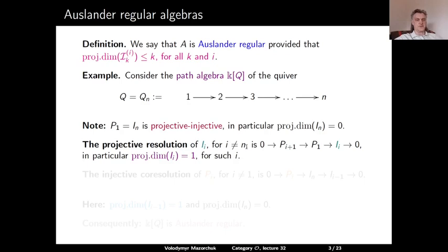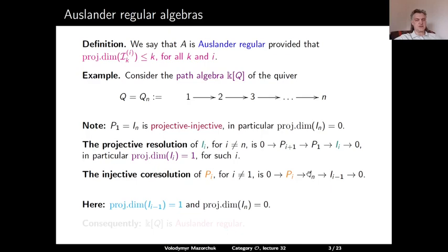Dually, the injective co-resolution of P_i, for i different from 1, looks as follows. P_i is a submodule of I_N, and the cokernel of this embedding is I_{i-1}. In this resolution, the projective dimension of I_i is 0 — this is the degree-0 component of the resolution. And in homological position 1, the projective dimension of I_{i-1} is exactly 1 by this computation. Consequently, this algebra is Auslander-regular, directly from the definition.